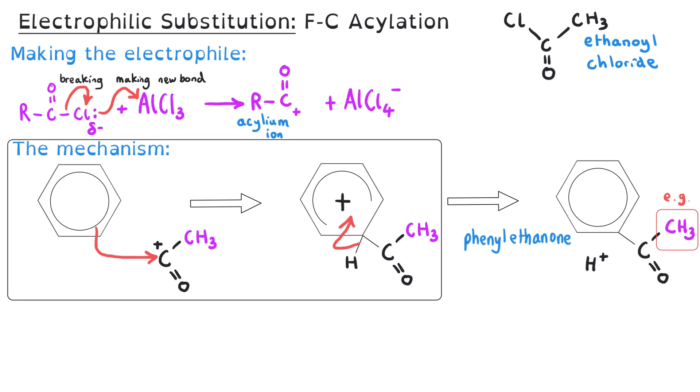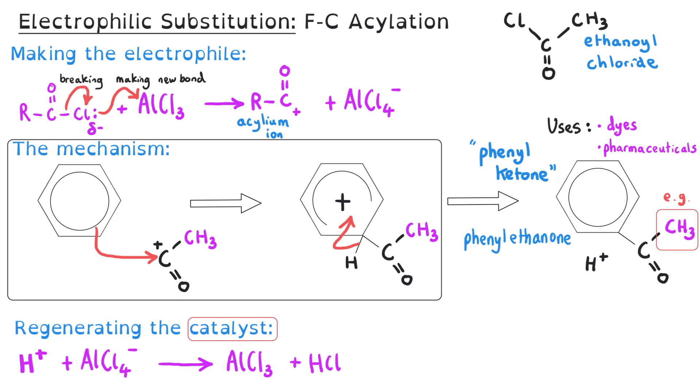As before, you wouldn't need to show this as part of the mechanism, but it's important to have awareness of what we're producing in this mechanism. And also, as with nitration, the catalyst is regenerated by reacting with the hydrogen ion that has been replaced. So the hydrogen ion, which is highly reactive, reacts with the AlCl4- that was produced when we made our electrophile in the first place. This turns into AlCl3, that's our catalyst being regenerated, and also HCl. So in Friedel-Crafts acylation, as well as our phenylketone, phenylethanone in this case, we also produce HCl as a byproduct.